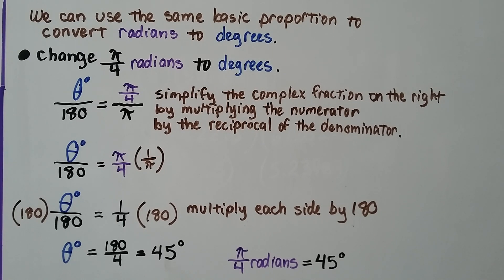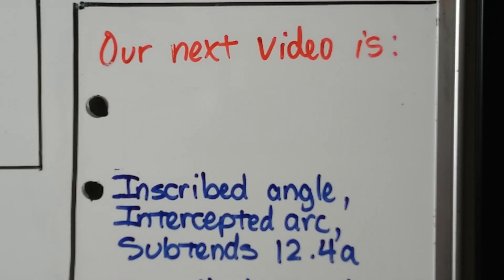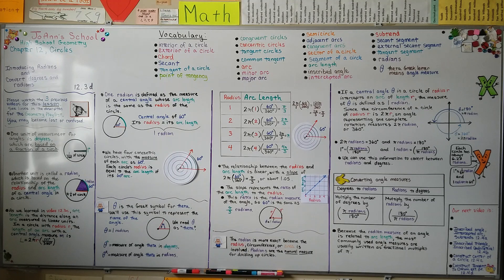If this trig/pre-calculus proportion method is a little too difficult, that's okay — you can use the other method we showed. It's the same thing; use whichever makes more sense to you. Our next video is lesson 12.4a, about inscribed angle, intercepted arc, and subtends. This lesson touched on some trigonometry but also used algebra in our geometry. I hope you understand radians and converting between degrees and radians. See you next lesson — have a great day!